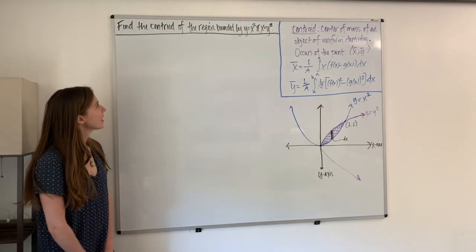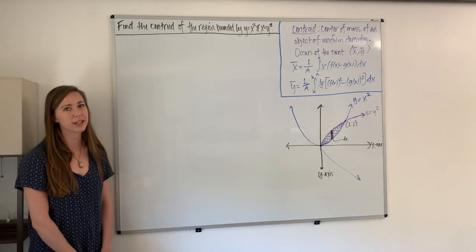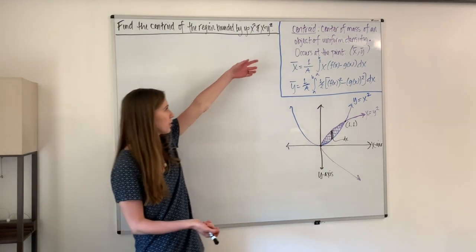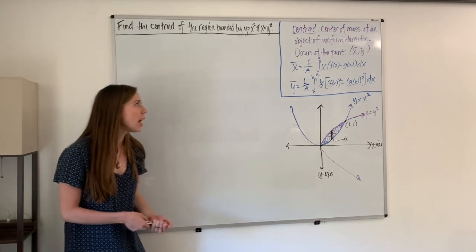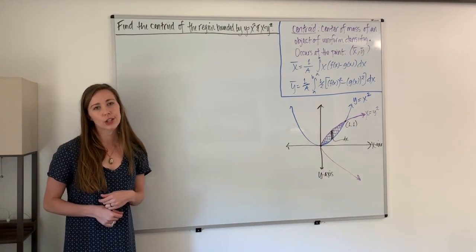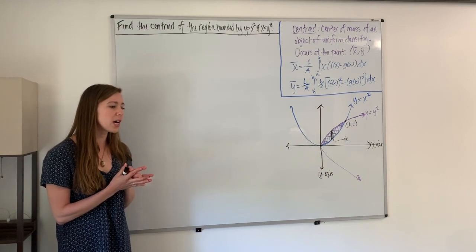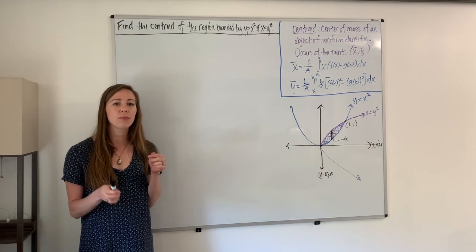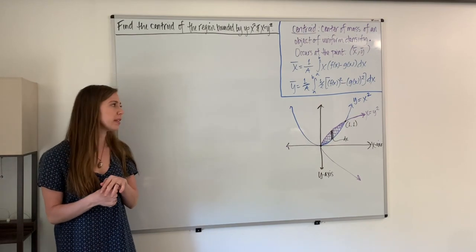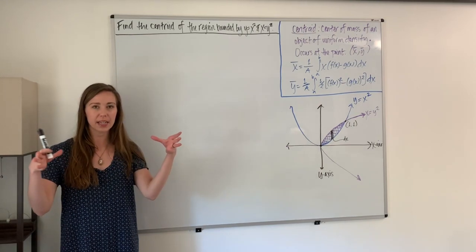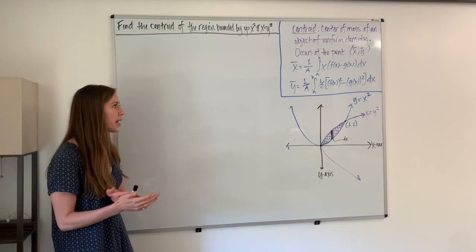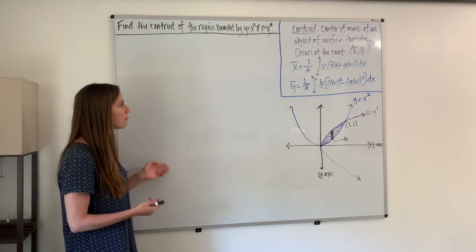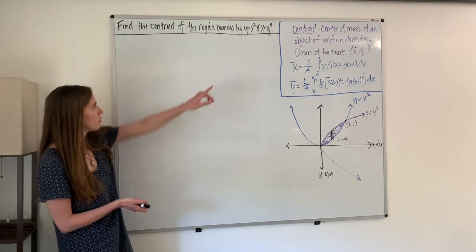Here we're asked to find the centroid of a region bounded by two curves. The centroid is the center of mass of an object of uniform density. Think of it this way: if you had a plate and wanted to balance it on a marker or a pen, you would need to find the position in that plate that would let you balance it equally — that would be the centroid, assuming the plate has uniform density.